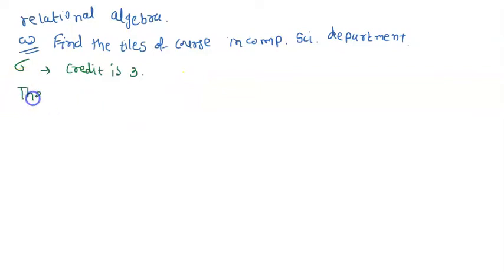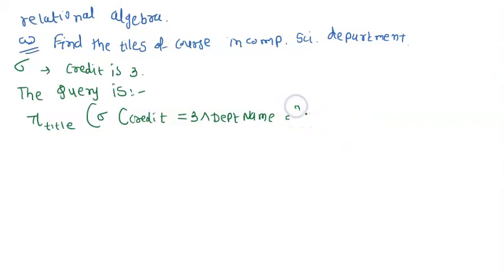So here the query can be written as: PI title, Sigma in bracket, credit equals three and department name equals inverted comma computer science, and then we have to write COURSE.